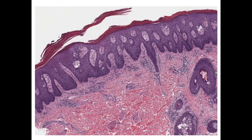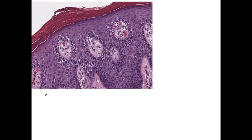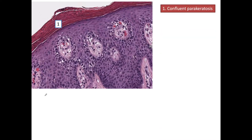Coming to the histopathology — this is the H&E stained slide of the lesion where we can see the changes in the epidermis. We see acanthosis of the epidermis along with elongation of the rete ridges. Starting from the stratum corneum, we can see confluent parakeratosis. Parakeratosis is defined as presence of nucleated keratinocytes in the stratum corneum, believed to be due to accelerated turnover of keratinocytes.